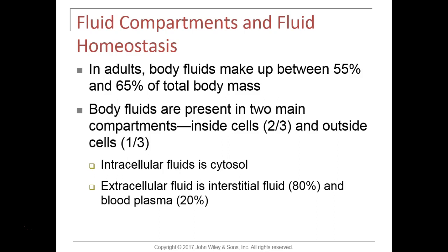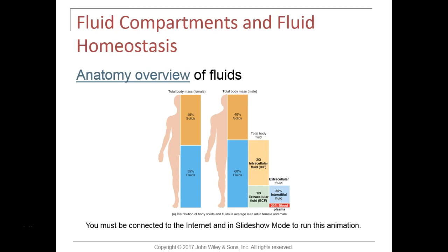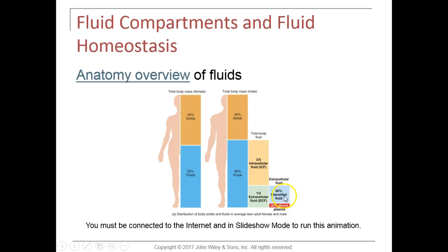This is just a little overview of the anatomy of fluids in the body. Two-thirds of all fluid in the body is inside cells — the intracellular fluid. About one-third of all fluid is outside cells, and that is subdivided into 80% interstitial fluid and 20% in the plasma of the blood.